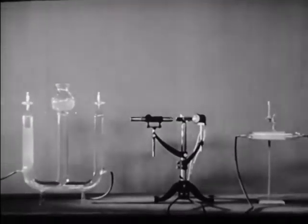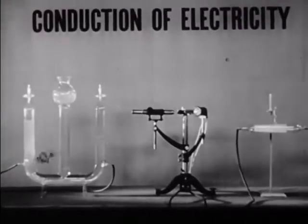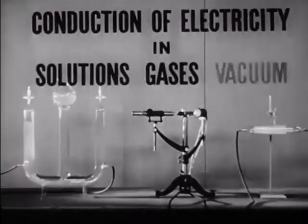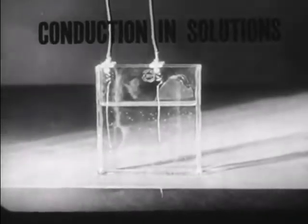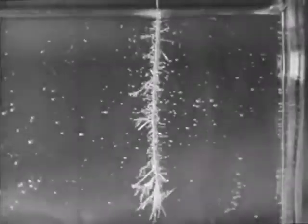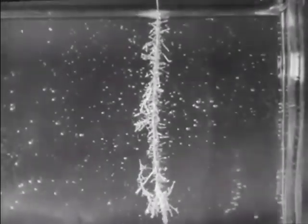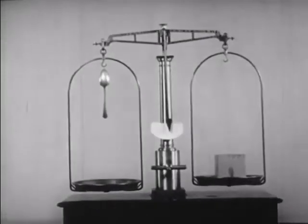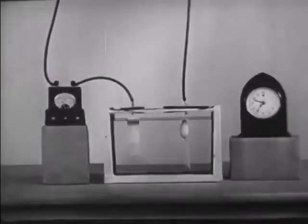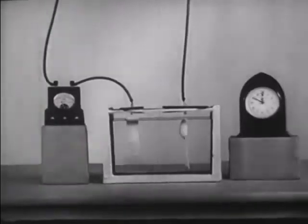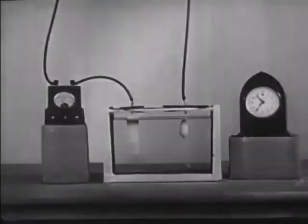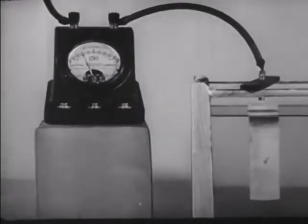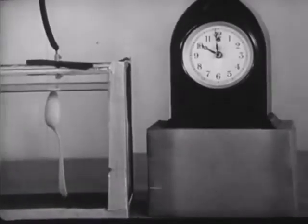This covers elementary phenomena: the conduction of electricity through solutions, through gases, and through vacuum. In passing a current through a solution of silver nitrate, we find that metallic silver is deposited. An exact relationship exists between the weight of this silver and the amount of electricity used. We shall now deposit silver on a spoon which we have carefully weighed, then make the spoon the negative electrode in this solution of silver nitrate. We measure the current with an ammeter and the time with a clock.